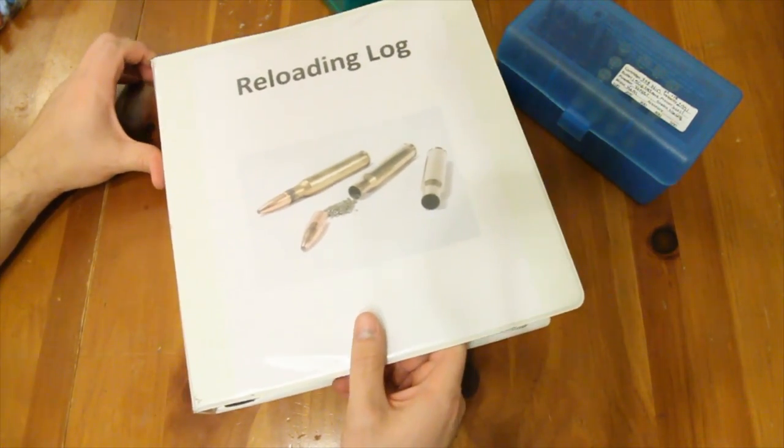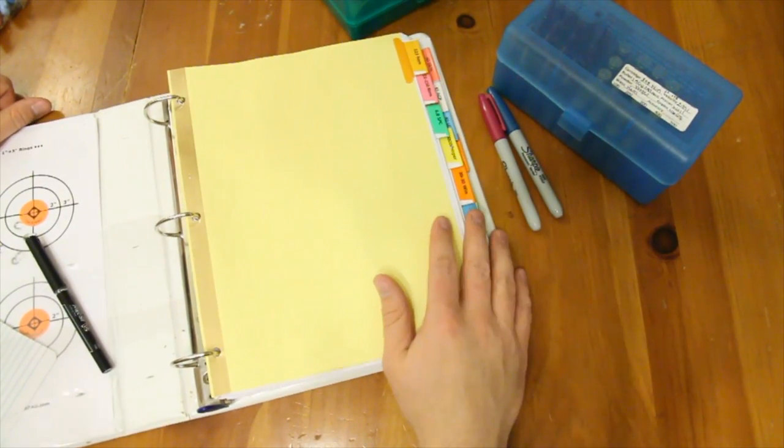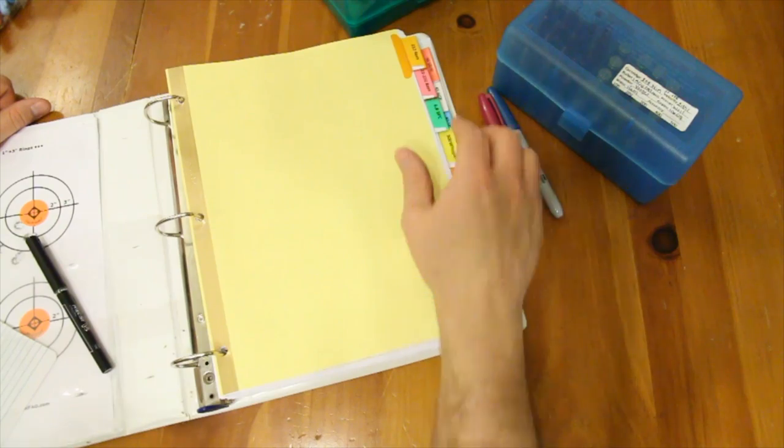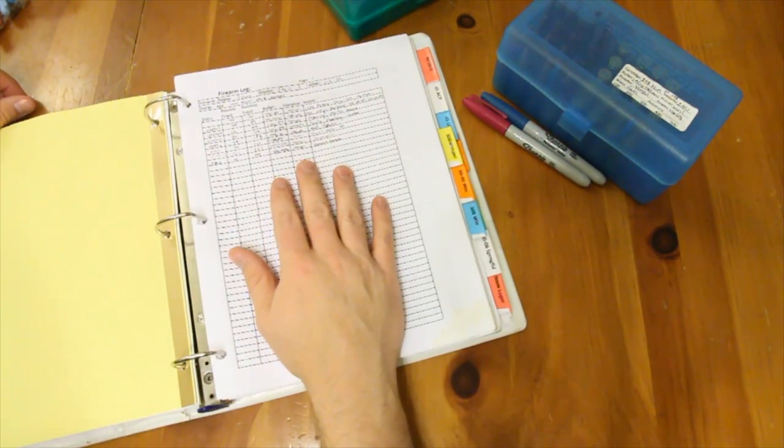Mine is just a simple three ring binder with pages that I've printed off. I've got different tabs for each of the cartridges I load for. We'll take the 6.8 as an example. Now I don't do this for all of my guns, but for some of them I keep a log.